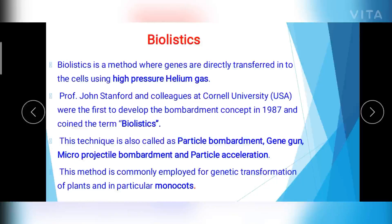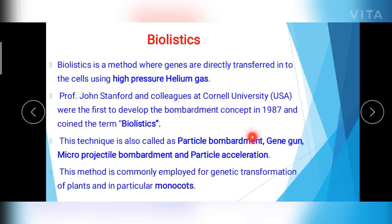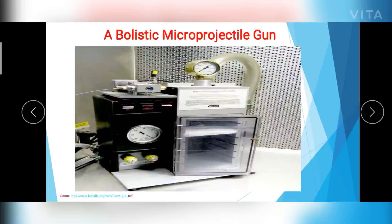Coming to the first physical method of gene transfer: biolistics. Biolistics is a method where genes are directly transferred into the cells using high pressure helium gas. This method was first developed by Professor John Stanford of Cornell University in the year 1987. The alternate names of this method are particle bombardment method, gene gun method, microprojectile bombardment method, and particle acceleration. This method of gene transfer is commonly employed in monocots.